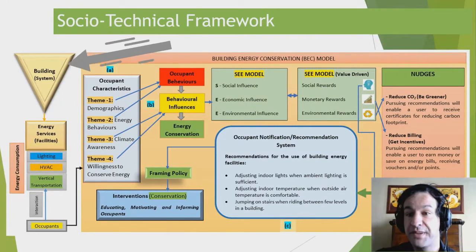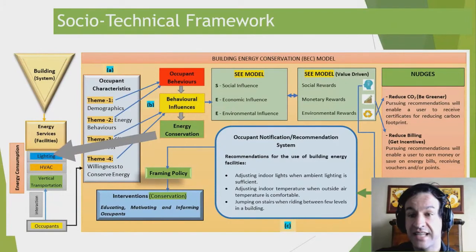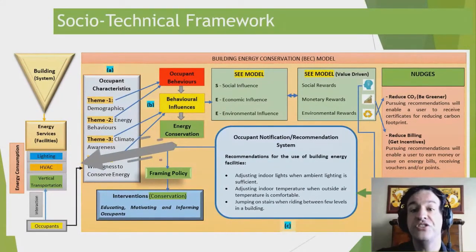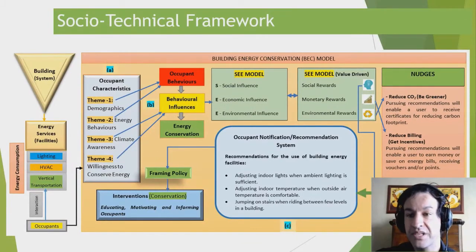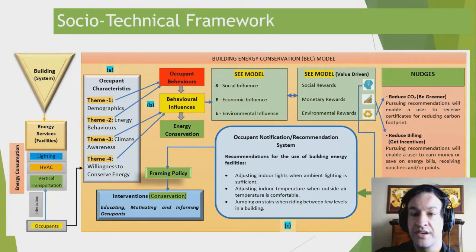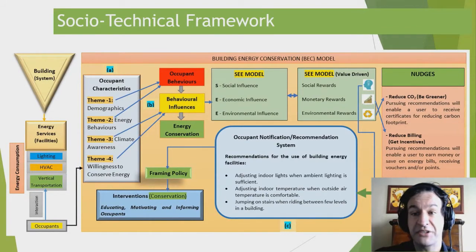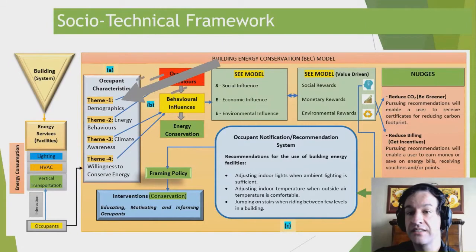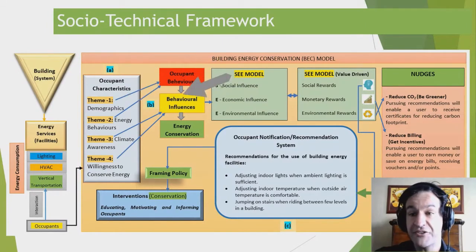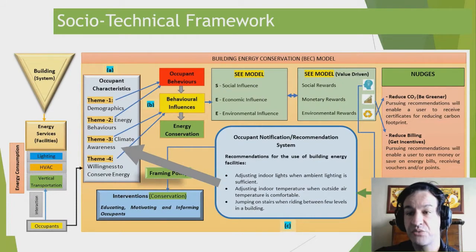The building has energy services, and we use three particular ones: lights found in rooms, open spaces, and corridors; air conditioning; and lifts or elevators. Other energy-consuming artifacts such as computers or microwaves are ignored. There is an interaction between occupants and these services. Our first hypothesis is that occupant characteristics are correlated with their energy conservation behavior — demographics such as age and salary, and behavioral traits such as preference for taking stairs.